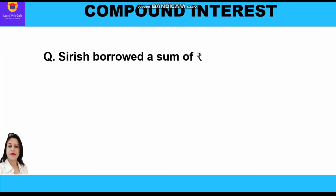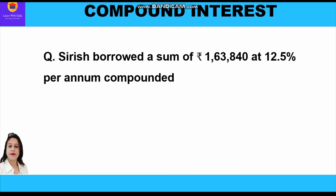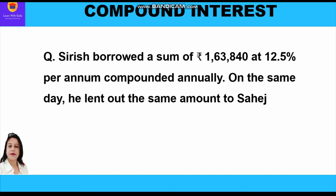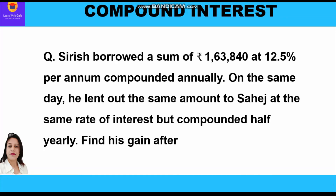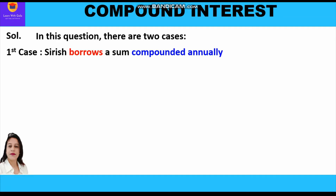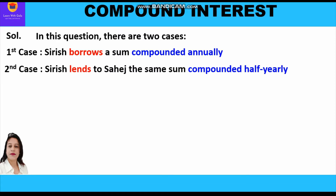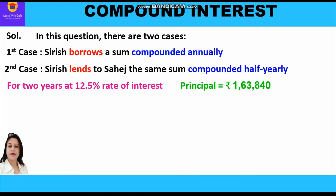Sirish borrowed a sum of rupees 1,63,840 at 12.5 percent per annum compounded annually. On the same day he lent out the same amount to Sahaj at the same rate of interest but compounded half-yearly. Find his gain after two years. In this question there are two cases: first case, Sirish borrows a sum compounded annually, and in the second case, Sirish lends to Sahaj the same sum compounded half-yearly.